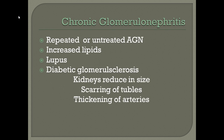Chronic glomerulonephritis (CGN) comes from repeated or untreated episodes of acute glomerulonephritis, increased lipids, lupus from lock-and-key complexes, excessive lock-and-key complexes due to complement dysfunction, and diabetic glomerulonephritis. In CGN, kidneys are reduced in size, with scarring of the tubules and thickening of the arteries. This thickening and scarring can also accelerate renal artery thrombosis.